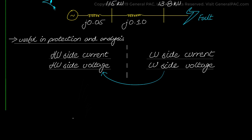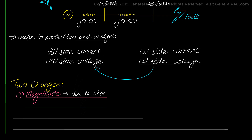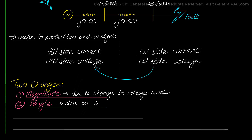To do this we have to account for two changes in sequence current values. The first involves the magnitude due to the change in voltage level, and the second involves the angle, since we have a delta-y transformer and the angle will be subject to change.